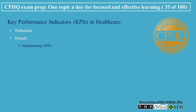Implementing KPIs: Selection of indicators — choosing KPIs that are relevant, clear, and directly linked to the organization's goals. Data Collection, establishing systems for accurate and consistent data collection. Analysis and reporting, regularly analyzing KPI data and reporting findings to relevant stakeholders. Actionable Insights, using insights gained from KPIs to make informed decisions and implement changes.